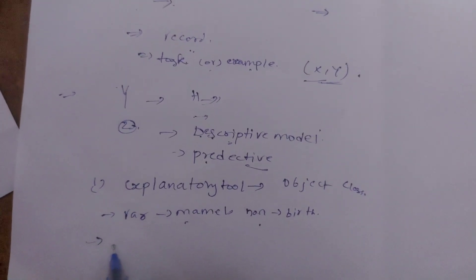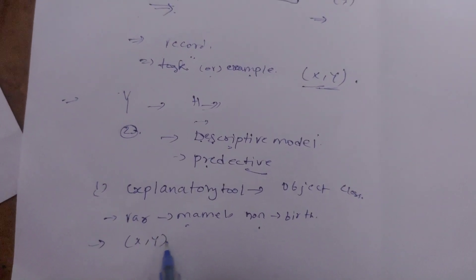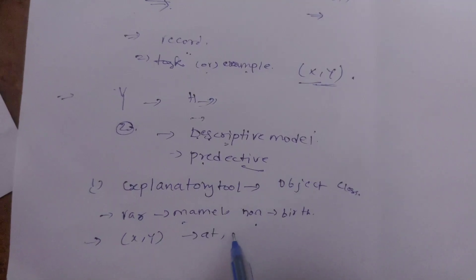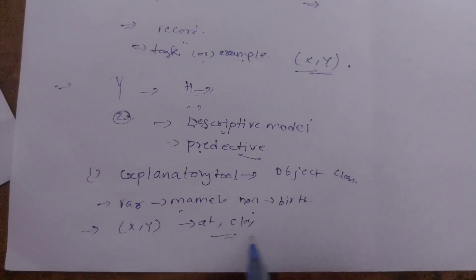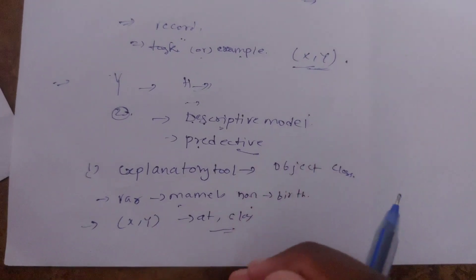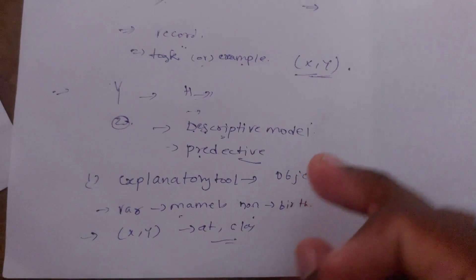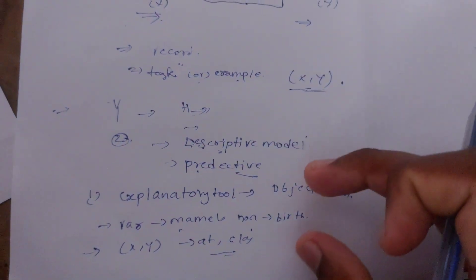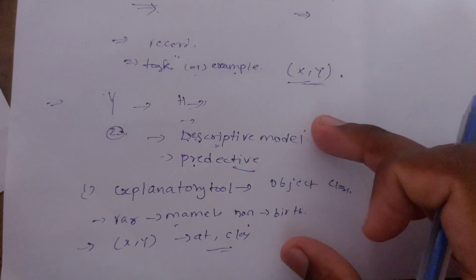In descriptive modeling, you can set two attributes as well as the class label. You can set two attributes in this descriptive modeling. This tool is very helpful.